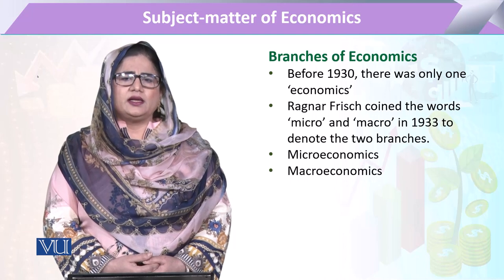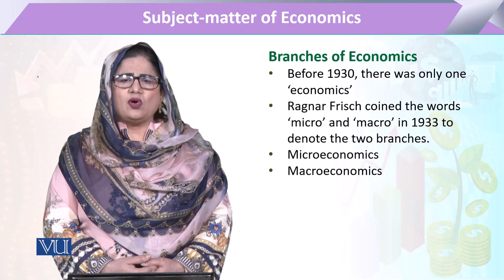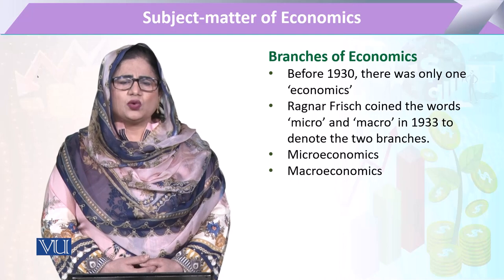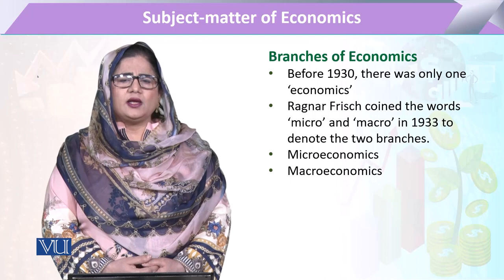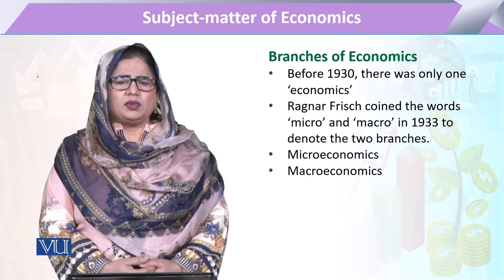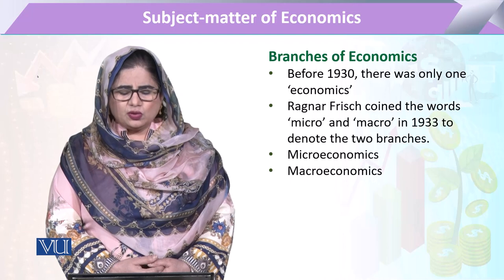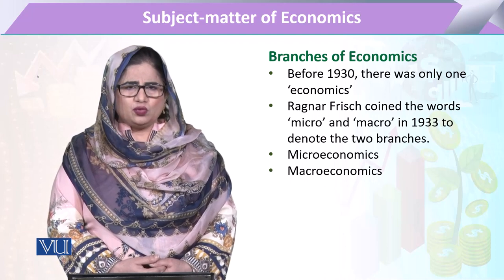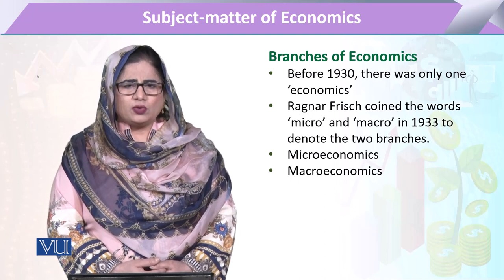Before 1930, the era of depression, economics was termed simply as economics. But then the term was coined by Ragnar Frisch, who said that economics can be divided into two broader aspects: one called micro and the second called macro. So two basic schools of economics came into being — microeconomics and macroeconomics.